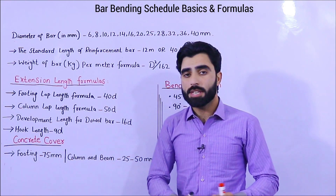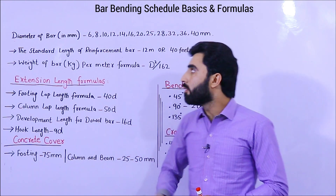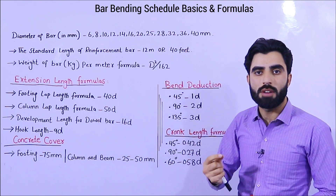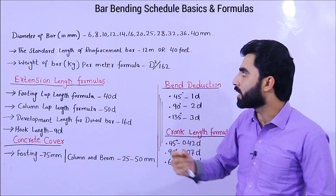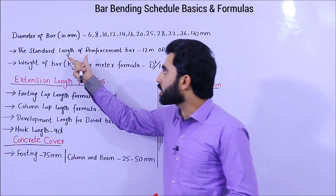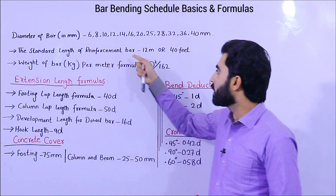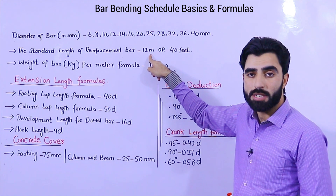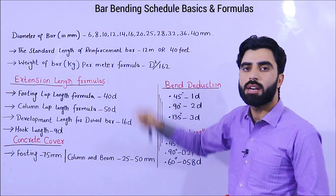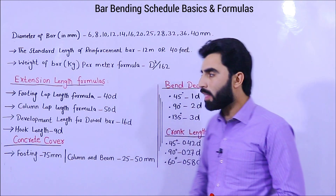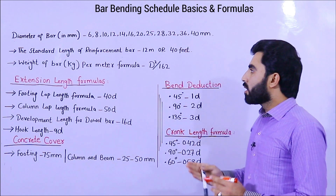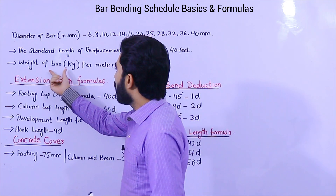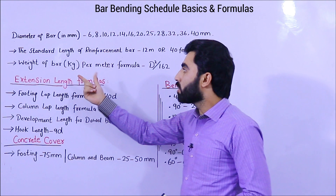The second basic is that for these steel diameters, the standard length of a steel rod from the factory is 12 meters or 40 feet. So each standard length is 40 feet or 12 meters.